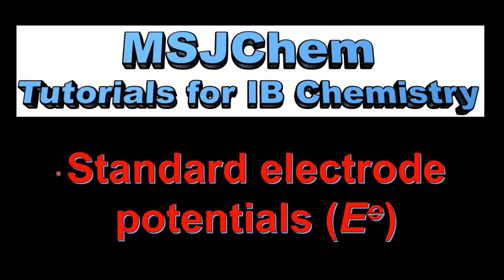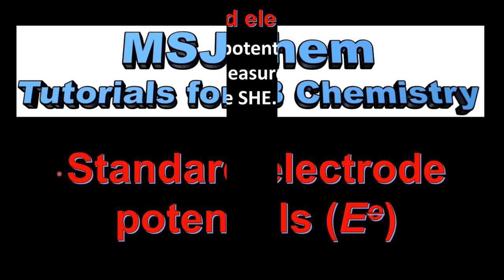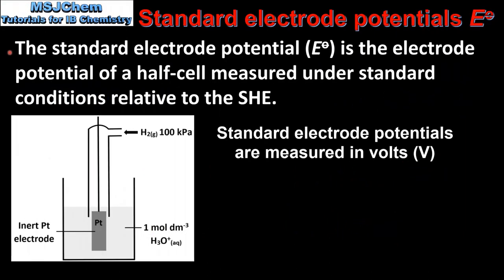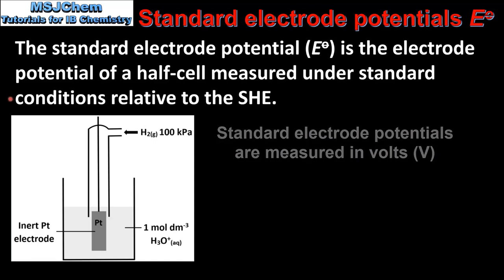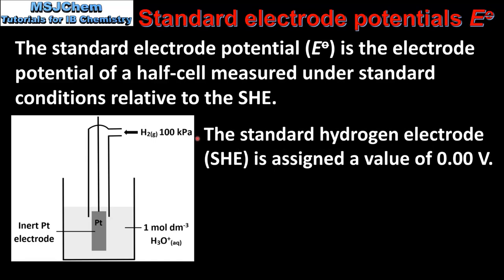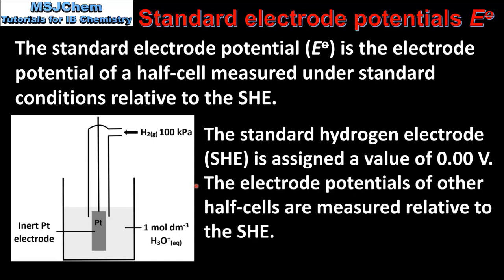This is MSJChem. In this video I'll be looking at Standard Electrode Potentials. The standard electrode potential is the electrode potential of a half cell measured under standard conditions relative to the SHE. The SHE is the standard hydrogen electrode, which we can see on the left. The SHE is assigned a value of 0 volts, and the electrode potentials of other half cells are measured relative to the SHE.